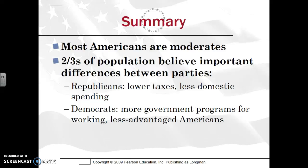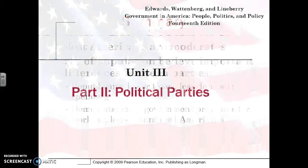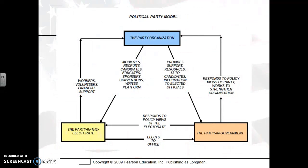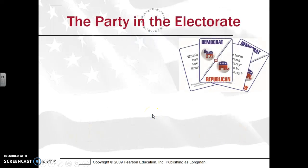Most Americans are moderates, and two-thirds of the population believe there are important differences between the parties — mainly domestic spending and taxes, whereas Democrats do want more government intervention or programs. Continuing on to Part 2 and looking at the political party model, you have the political organization, the party in the electorate, and the party in the government, all serving important needs to keep the political party afloat.